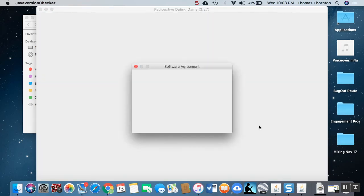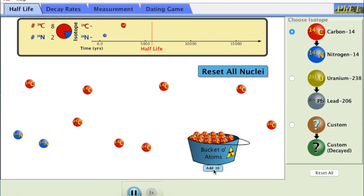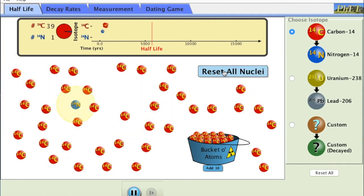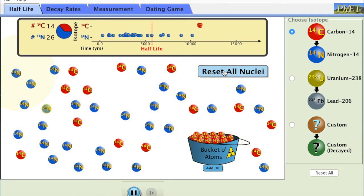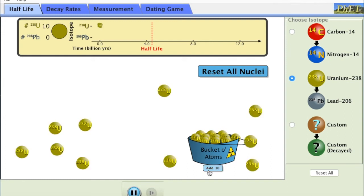But it will eventually open up and show this screen right here. Once we actually get to using this program we're going to start off in the half-life tab. It automatically starts off with carbon-14 decaying into nitrogen-14. First thing we do is click add atoms out of that bucket of atoms. When those atoms go out onto the screen they automatically start decaying at their correct half-life rate. As you can see up in the top it's got a half-life of just over 5,000 years.